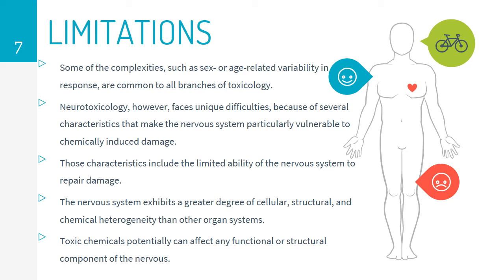The nervous system exhibits a greater degree of cellular, structural, and chemical heterogeneity than other organ systems. Toxic chemicals potentially can affect any functional or structural component of the nervous system. For example, they can affect sensory and motor functions, disrupt memory processes, and cause behavioral and neurologic abnormalities.